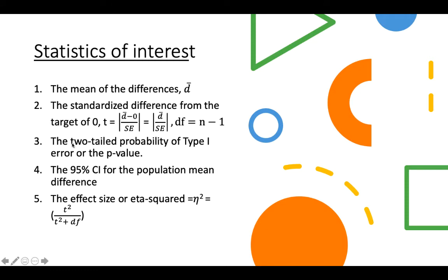We also want to look at the two-tail probability — the type 1 error or the p-value — and the 95% confidence interval and the effect size. The effect size is calculated as T-squared divided by T-squared plus DF. That's the effect size formula. I don't require you to calculate the effect size, but it's there if you want to include it.